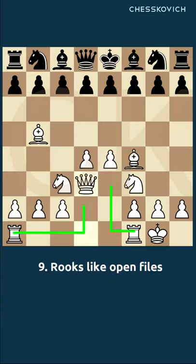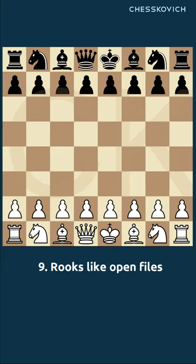We have seen in the previous video that you have to develop your rooks through the open files in the center. And why is that? We can take an example. If you want to develop one of the rooks — let's take this one — and we don't want to develop it through the center, then what we have to do...